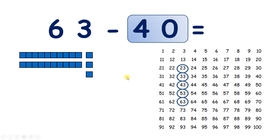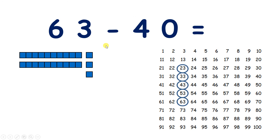So remember, for each 10 we take away, we move up one place on our hundred square. And we've taken away 4 tens, so we've moved up 1, 2, 3, 4 places. So 63 minus 40 equals 23.